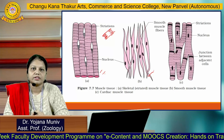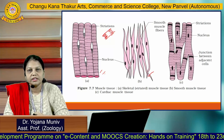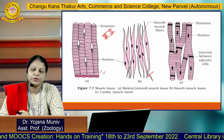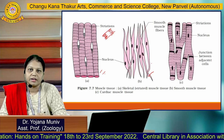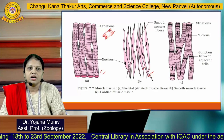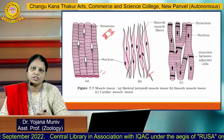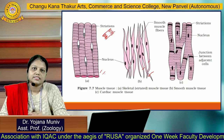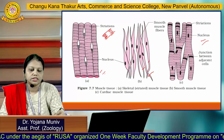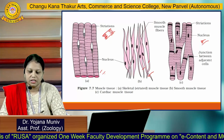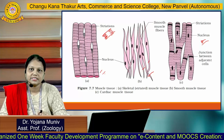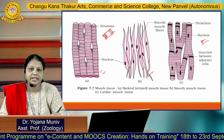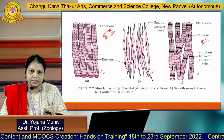Smooth muscle fiber is also called visceral muscle fiber because it is related to visceral organs. Striated muscle fibers are multi-nucleated, with many nuclei present at the periphery, whereas smooth muscle fibers are spindle-shaped and have only a single nucleus. Cardiac muscle tissue shows characteristics of both skeletal and smooth muscles — like skeletal muscles, they show alternate light and dark bands, and like smooth muscles they have only a single nucleus. Cardiac muscles are branched, while skeletal and smooth muscles are unbranched. Cardiac muscles are involuntary, meaning they are under the control of the nervous system.